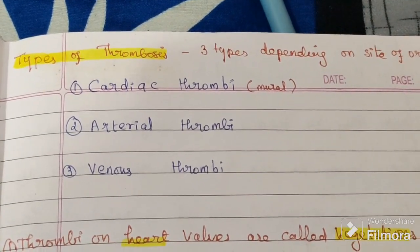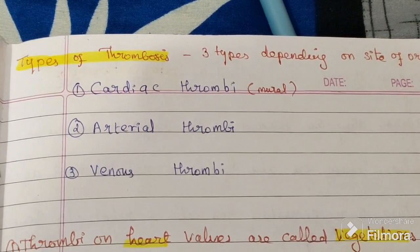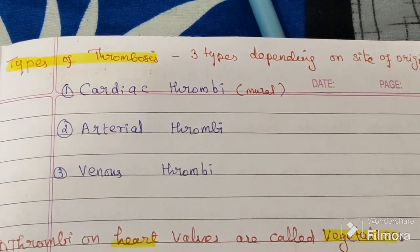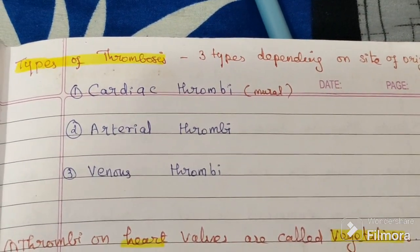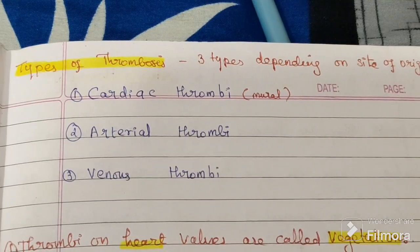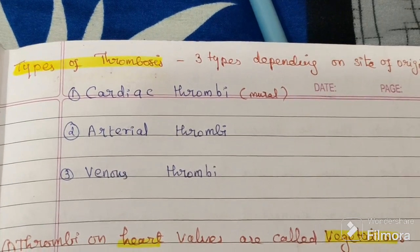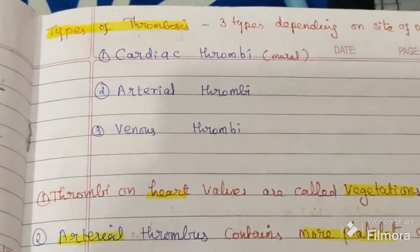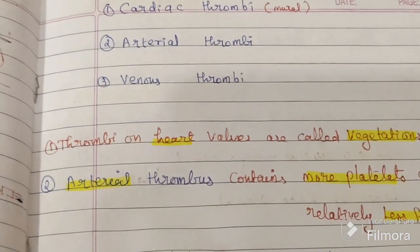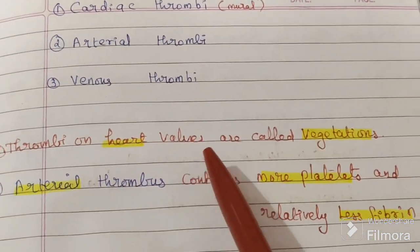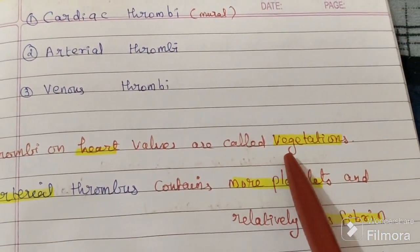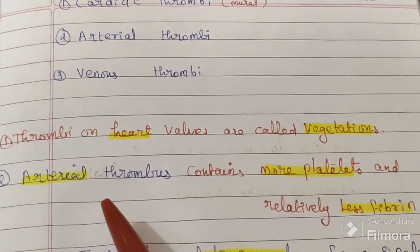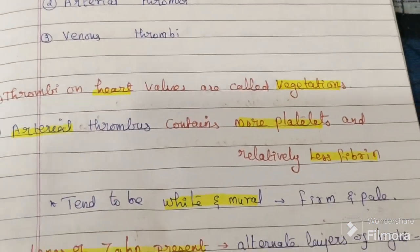The second type is arterial thrombosis, where the artery has thrombosis. The third type is venous thrombosis, forming inside veins. Thrombosis on heart valves is also given the name 'vegetation.' Arterial thrombosis and venous thrombosis are the other two types.